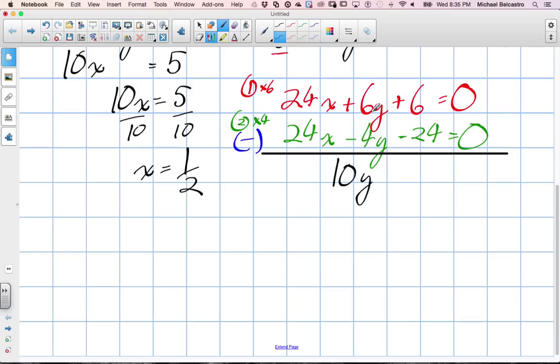Here we get six minus negative 24, which is the same as six plus 24. So we get positive 30. And zero minus zero is still zero.